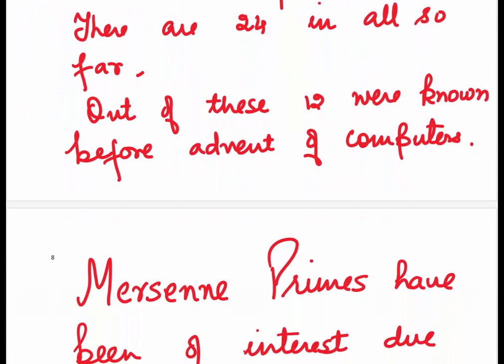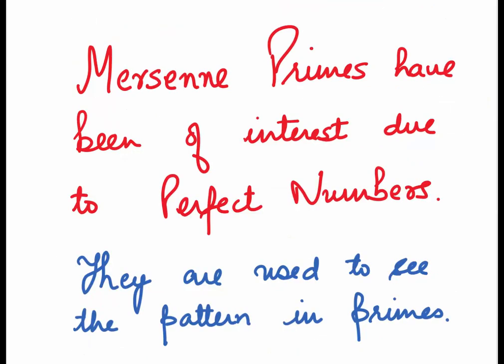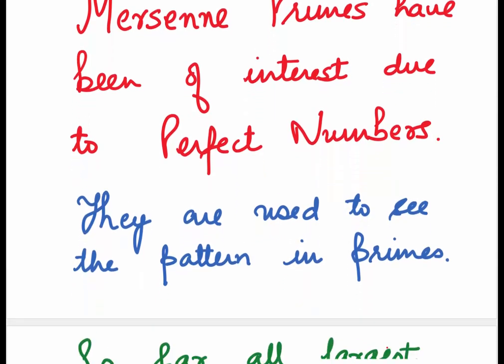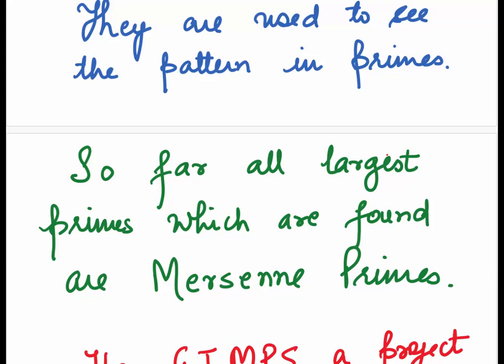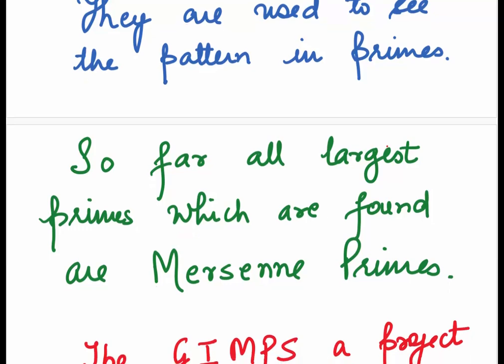Out of these, 12 were known before the advent of the computers. Mersenne primes have been of interest due to perfect numbers. They are used to see the pattern in primes. So far, the largest primes which are found are Mersenne primes.